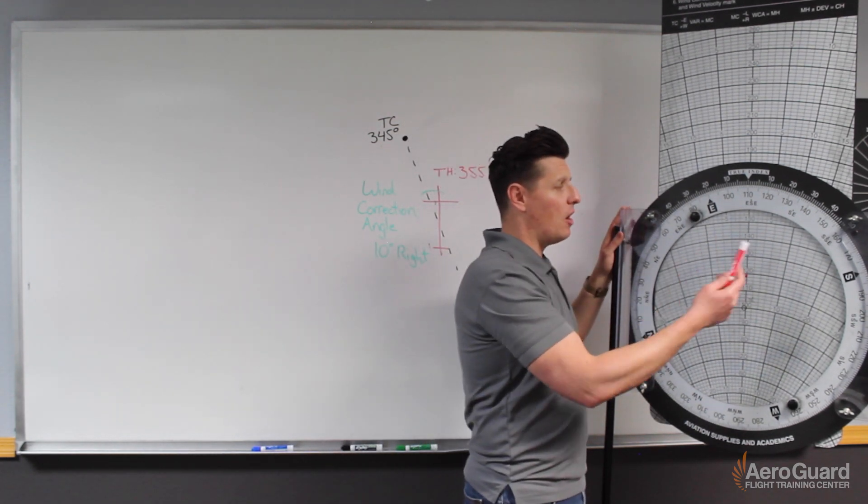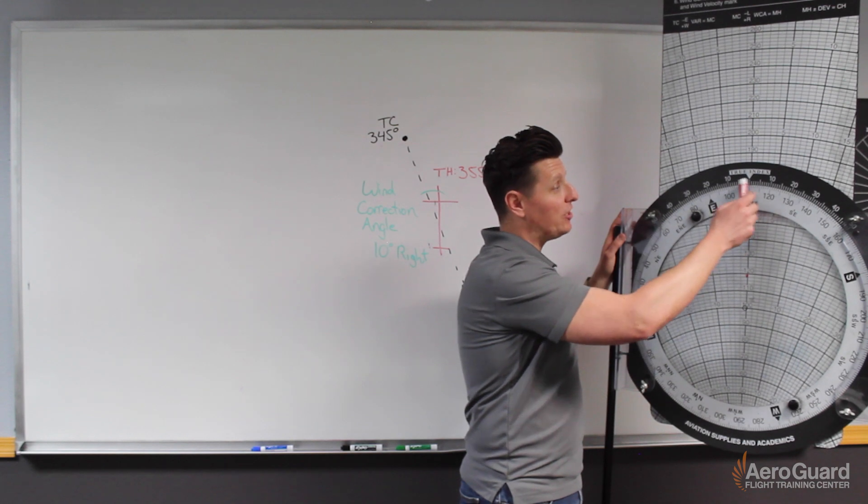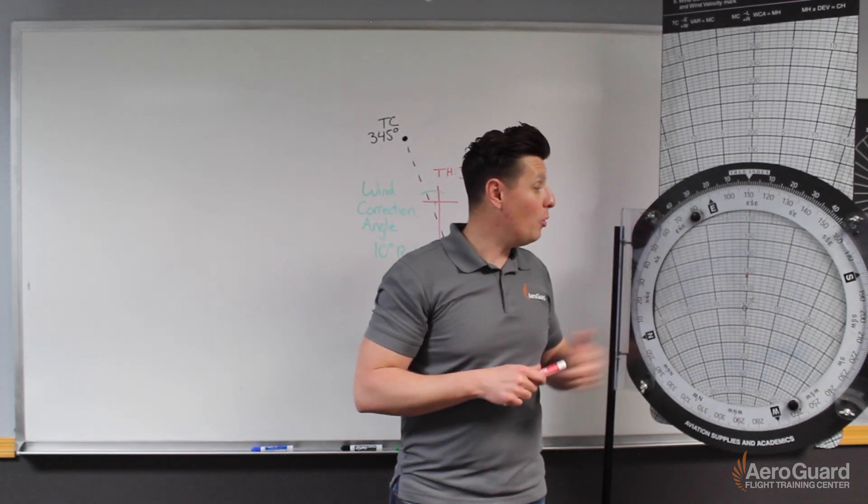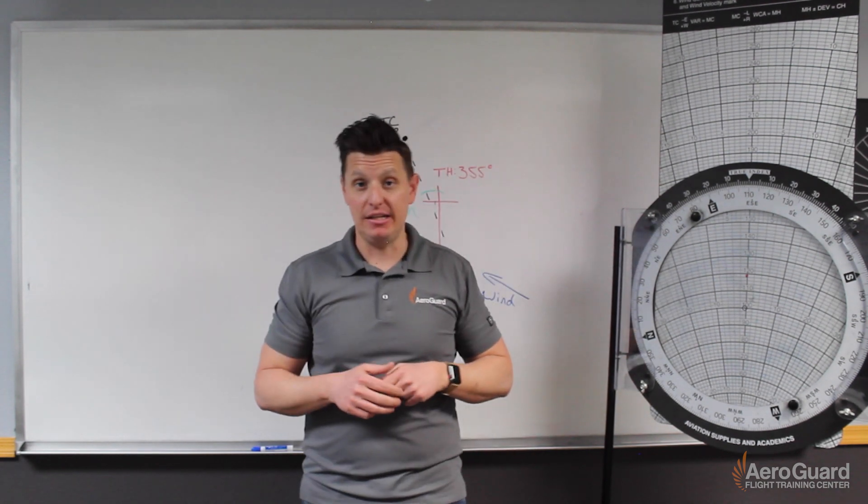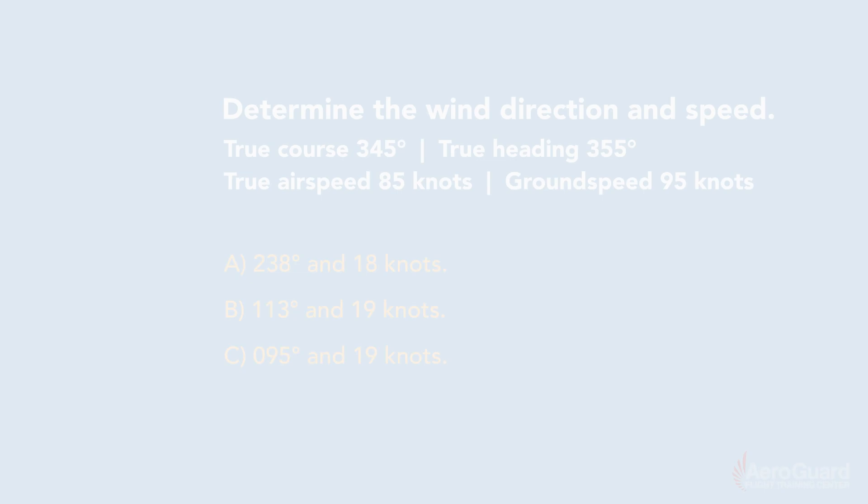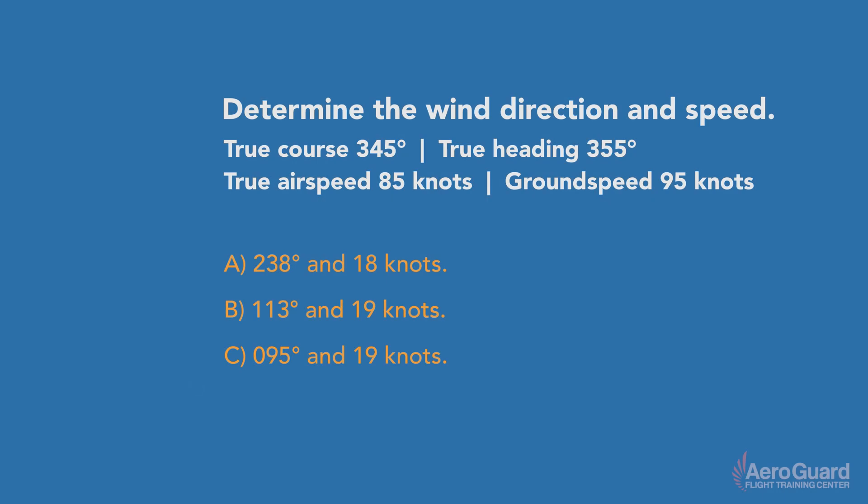So we're looking for, in our answer, a wind direction at approximately 110 degrees and a wind speed of around 19 knots. So let's go back to our question now, and look at our three possible answers, and determine which one is correct. In this example, we came out with the answer of around 110 degrees and 19 knots, so we know answer B is the correct answer.